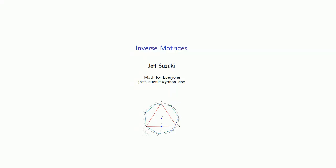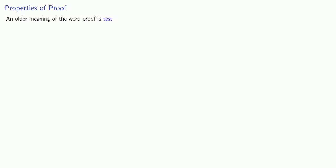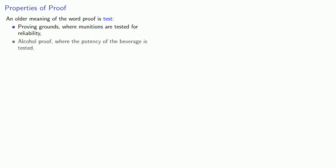Let's see if we can prove some theorems about inverse matrices. Today's lesson in etymology is about the word 'proof.' An older meaning of proof is a test — this is the sense where we talk about proving grounds, where we test munitions for reliability, or alcohol proof, where the potency of a beverage is tested, or proof of concept to show that an idea actually has some merit.